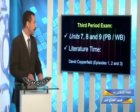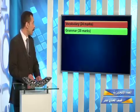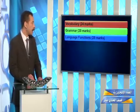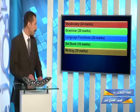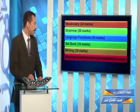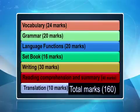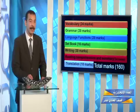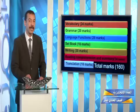I'm going to give you a brief view of the marking of your exams: vocabulary is out of 24 marks, grammar 20, language functions 20 marks, set book questions 16 marks, writing 30, reading comprehension and summary 40 points. The last part is translation which is out of 10 marks. The total is 160 marks. Now we are going to see each part individually and see the questions that will be included in each section.